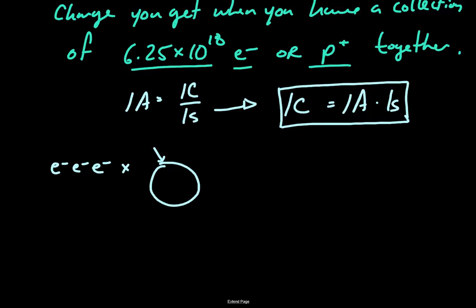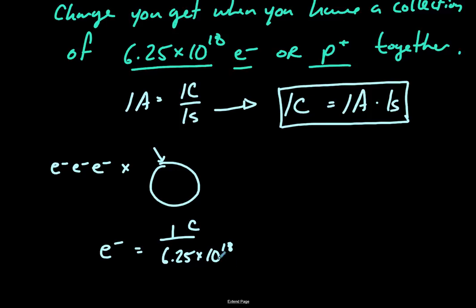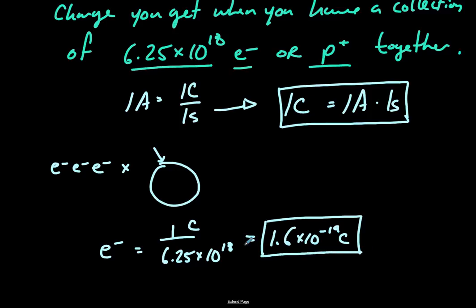If we take this amount of charge as the definition, we could say that an electron or a proton has an elementary charge. One Coulomb is split up into 6.25 times 10 to the 18 individual elementary charges, and that elementary charge is 1.6 times 10 to the negative 19 Coulombs. You don't have to memorize that value, but it's used a lot in physics.